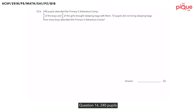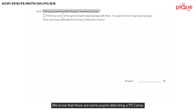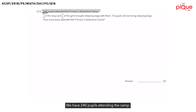Question 16. 240 pupils attended the Primary 5 Adventure Camp. We know that there are some pupils attending the P5 Camp — how many of them attended the camp? We have 240 pupils attending the camp.